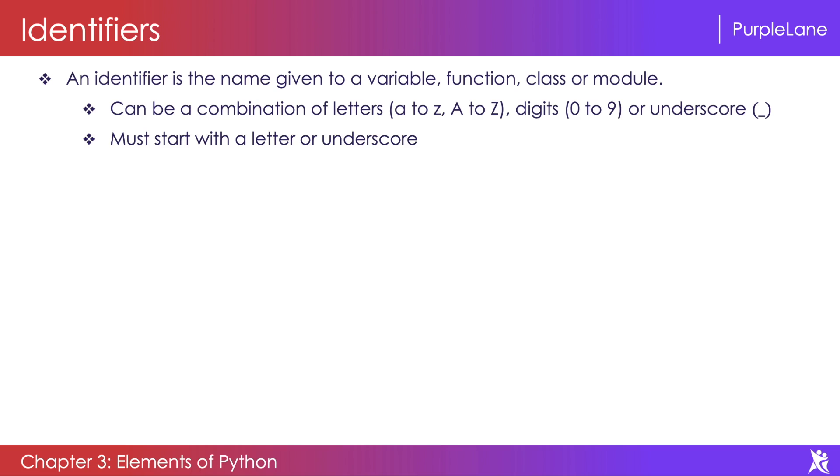It must not contain spaces or special characters. It can contain only these three: letters, digits, or underscore. Most importantly, an identifier cannot be a keyword. You will learn about keywords in a moment, but bear with me and understand that identifiers cannot be a keyword.